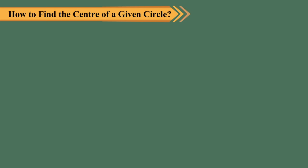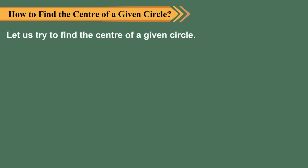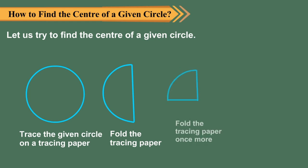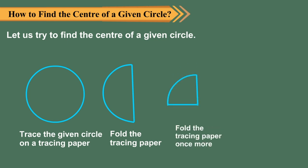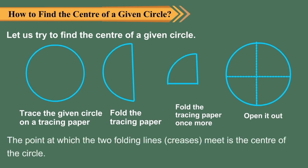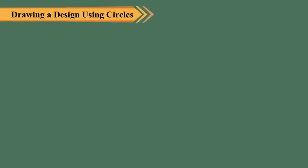How to find the center of a given circle: trace the given circle on a tracing paper, then fold the tracing paper once. Fold the tracing paper once more, then open it out. The point at which the two folding lines, or creases, meet is the center of the circle.